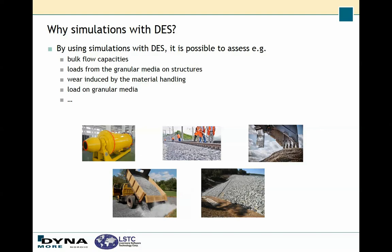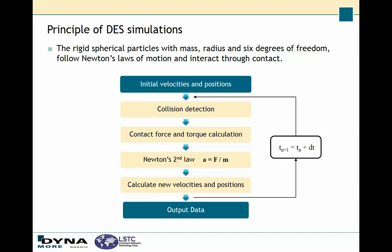We start by describing how simulations with discrete element spheres work. The spherical particles have a mass, radius, and six degrees of freedom, which means they can translate and rotate. The particles follow Newton's laws of motion and they interact through contact. Of course in these simulations we need an explicit time integration scheme.